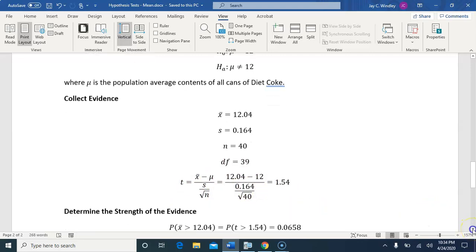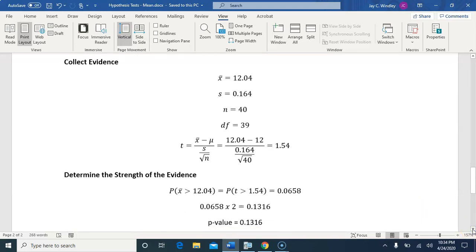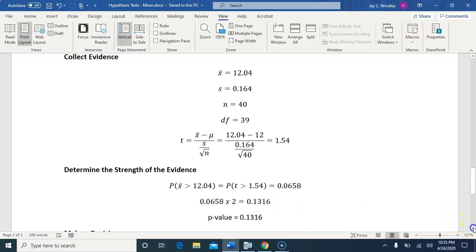Next step is to turn that 1.54 into a probability. The probability of getting an X-bar this big or bigger is the probability of a T bigger than 1.54, which is 0.0658, multiply by 2 because this is a two-tailed test, and we get 0.1316. So the p-value is 0.1316.